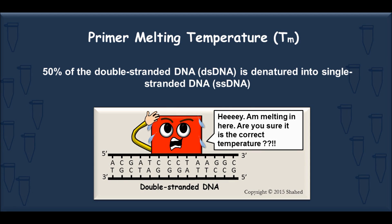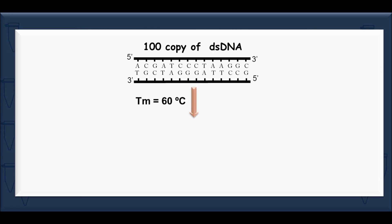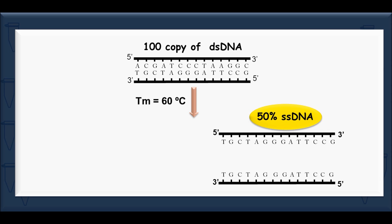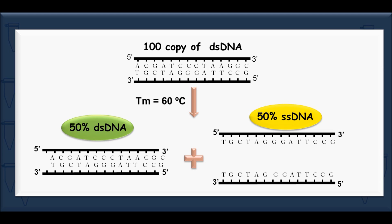The melting temperature is defined as the temperature at which 50% of the double-stranded DNA is denatured to single-stranded DNA. For example, if we have 100 copies of double-stranded DNA at a melting temperature of 60 degrees Celsius, then 50% of the double-stranded DNA will melt into single strands while the other 50% will stay as double strands.